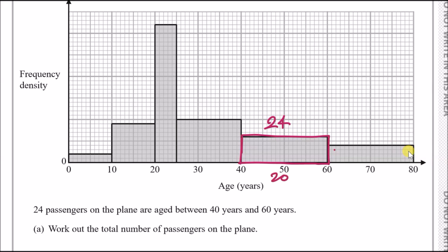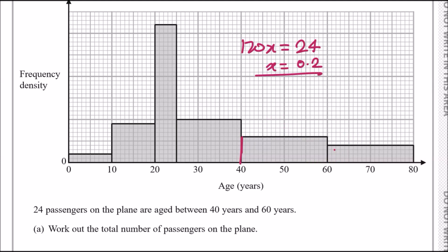Looking at the 40–60 block, the width is 20. Counting the grid squares, there are 6 blocks of height, so let's call the height 6x. Therefore 20 × 6x = 120x = 24. Dividing across, x = 0.2. Now that we know x, we can work out the height of every single block, find each area in terms of x, replace x with 0.2, and get the total area and total number of passengers.